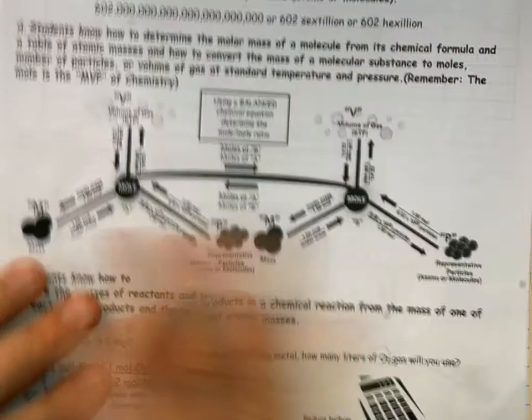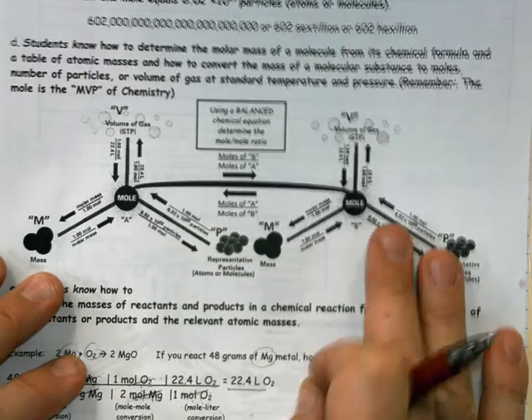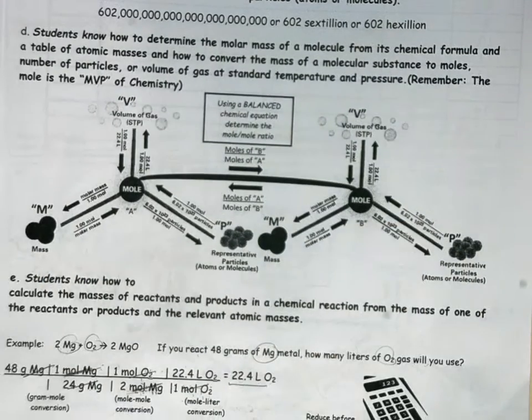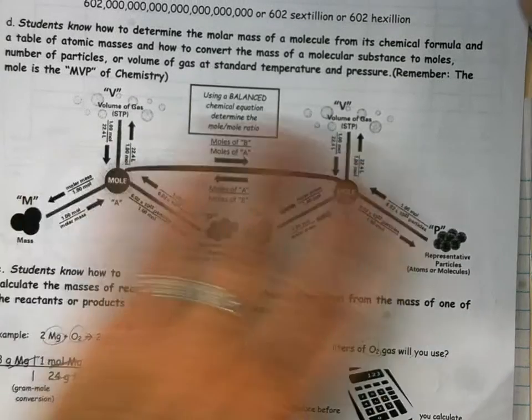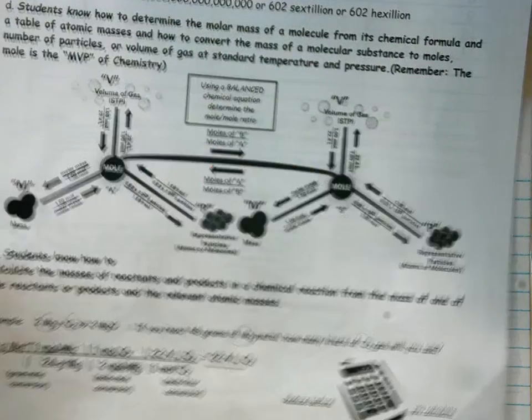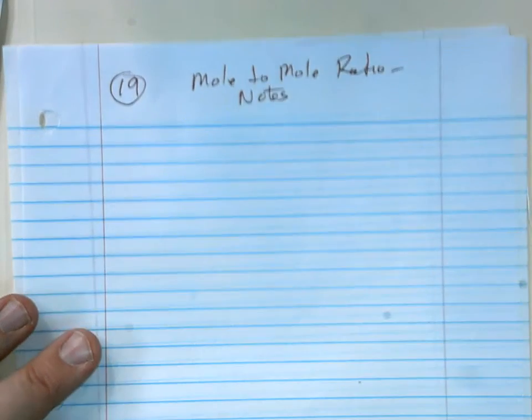Turn this over and we're going to be looking at the double mole MVP triangle. Have this next to your notes because our notes are primarily recopying this in a simpler form.